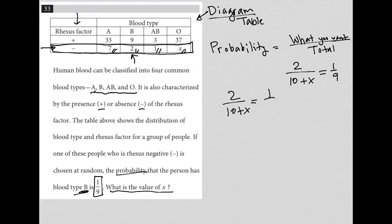This is what I'm going to solve in order to find the value of X. So to solve this, I can just cross multiply, and I get 18 equals 10 plus X. Subtract 10 from both sides. 18 minus 10 is 8. This is gone here. So 8 is equal to X. There is my answer. So the answer here is 8.